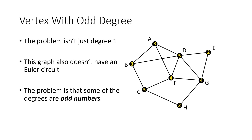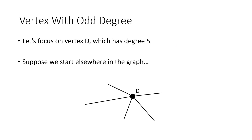But it turns out the problem is not just degree one. Here's a different graph, and I've indicated the degrees of the vertices with yellow numbers. This graph also doesn't have an Euler circuit, and the problem is that some of the degrees are odd numbers. For example, vertex D has degree five, and five is odd. It turns out that odd degree makes it impossible to have an Euler circuit. Let's focus on vertex D with degree five and understand why the five being odd is a problem.